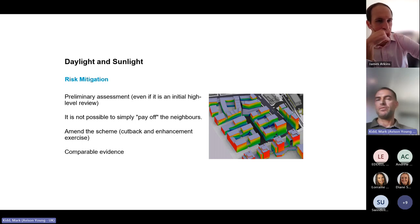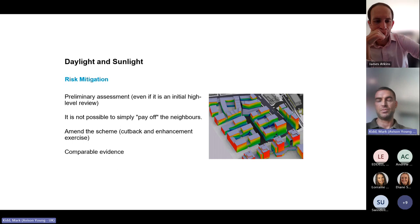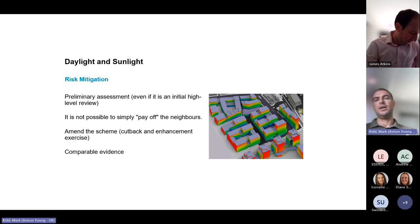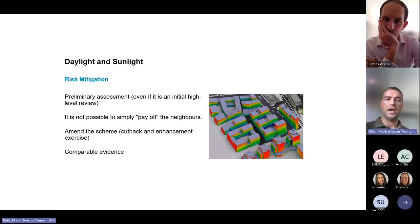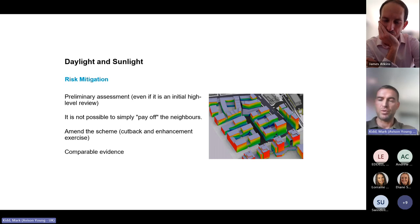We could also produce some cutbacks to the scheme — maybe the top needs to be set back to avoid material impact. Comparable evidence is also useful: particularly with NHS schemes in central London in more urban locations where it's inevitable that there will be some breaches, we may put forward comparable evidence to say that similar breaches have been accepted elsewhere, and while precedent is always different case by case, comparable evidence tends to be helpful in arguing the case for planning permission to be granted.